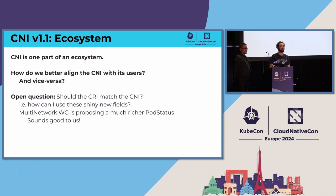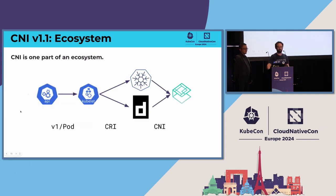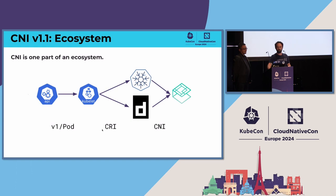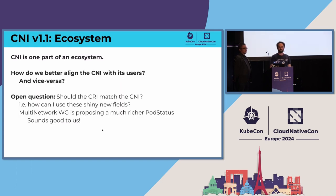An open question for the hallway track is: how do we better align the CNI with its end users? How do we align the users of CNI — all these components on the left — with CNI itself? There's no obvious answer. One of the things actively happening is the Kubernetes multi-networking working group, which is proposing among other things a richer pod status. Let's not be afraid to change the pod object — it only took us three years, so you can do it too.